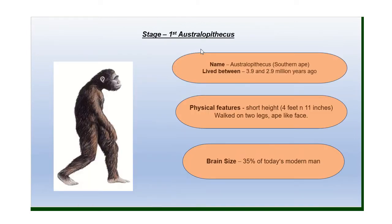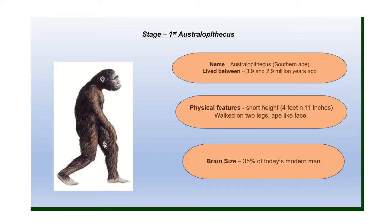First stage — Australopithecus, also known as Southern ape. They lived between 3.9 and 2.9 million years ago. Children, you can see in the picture they are very much similar to apes — see their face, their long arms, their legs, and their body; it's very hairy. They are very close to apes, but the only difference is they could walk on two legs. They had a very small brain, almost 35% of today's modern man, and their lifestyle was very close to an animal's life. They were dependent on plants for food.